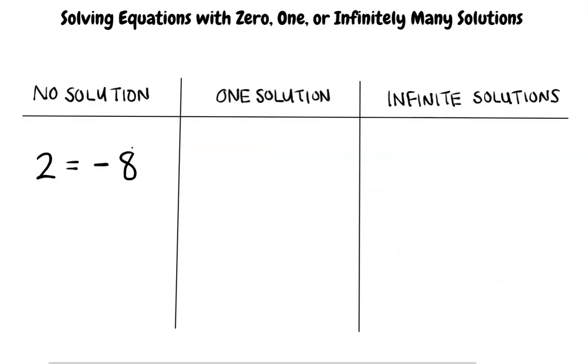If your answer does not contain a variable and instead has two numbers set equal to each other that do not equal each other, like 2 equals negative 8, then there will be no solution because 2 is never equal to negative 8, so the answer is no solution.